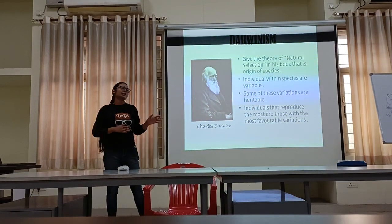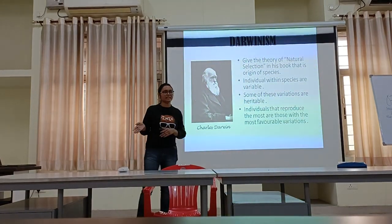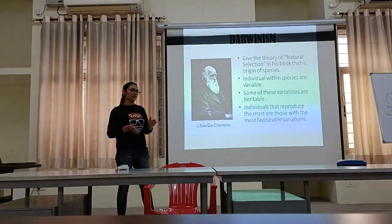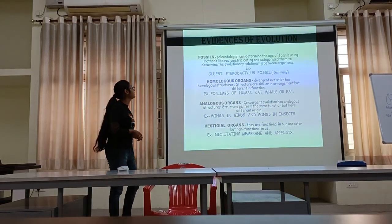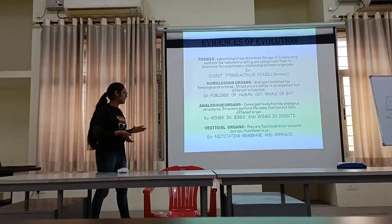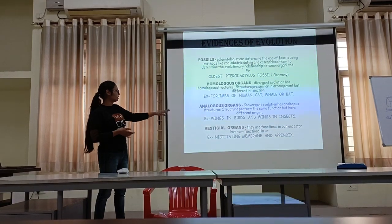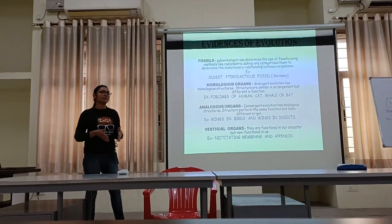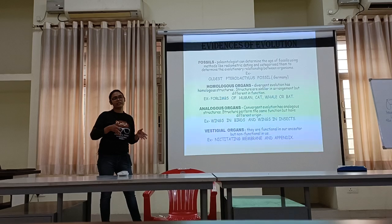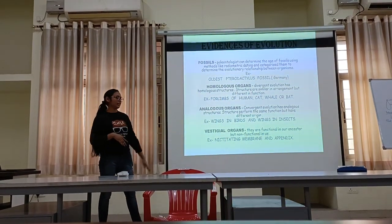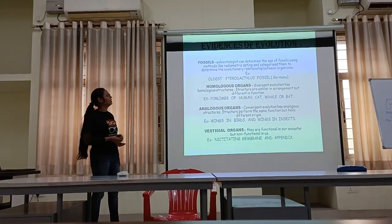Darwin studied finches and said that all finches belong to a common ancestor but still have variations due to environmental factors. Apart from this, there are some evidences of evolution, which include fossils, homologous organs, analogous organs, and vestigial organs. The major evidence is the vestigial organ, because they were functional in our ancestors but are not functional in us today — like the nictitating membrane near our eyes and the vermiform appendix. These are common evidences of evolution.